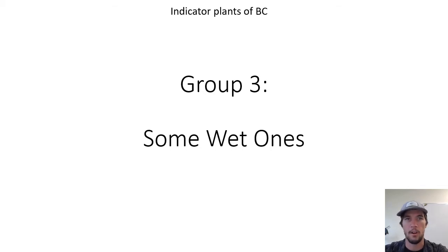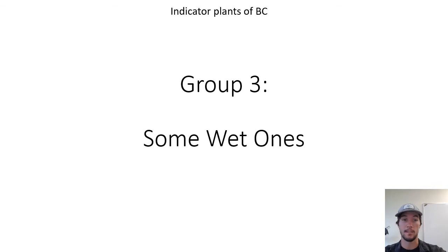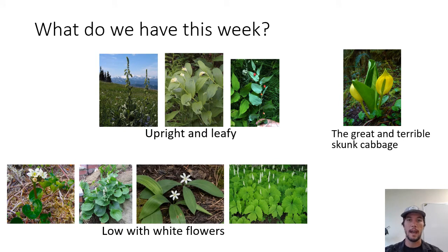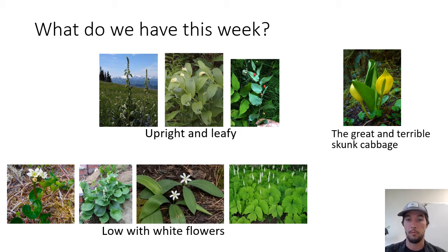We're back for another group of indicator plants of BC — this time group number three. We have some wet ones: these are plants that, except for one, all have a wet soil moisture regime. These are the plants you're going to find in really damp places. We've got a few different groups to distinguish between: your upright and leafy ones, your low plants with white flowers, and the great and terrible skunk cabbage — that's the one you're unlikely to confuse with any others.